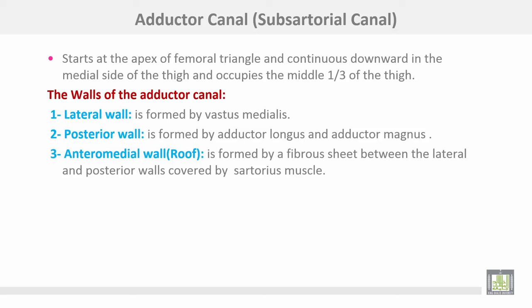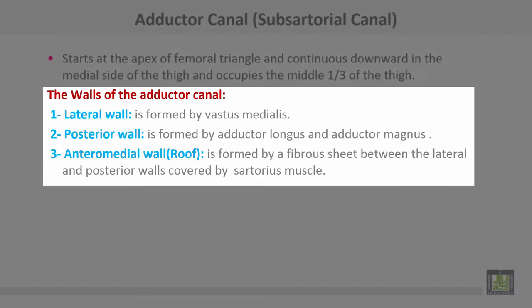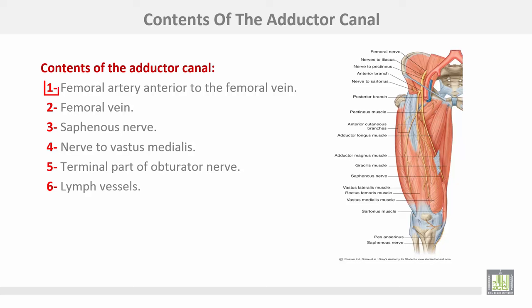The adductor canal, or subsartorial canal — sometimes called Hunter's canal — starts at the apex of the femoral triangle and continues downwards along the medial side of the thigh, occupying the middle third. Walls: the lateral wall is formed by vastus medialis; the posterior wall by adductor longus and magnus muscles; the anteromedial wall or roof is a fibrous sheet between the lateral and posterior walls, covered by sartorius muscle. Contents: femoral artery anterior to the femoral vein, femoral vein, saphenous nerve, nerve to vastus medialis, terminal part of the obturator nerve, and lymph vessels.